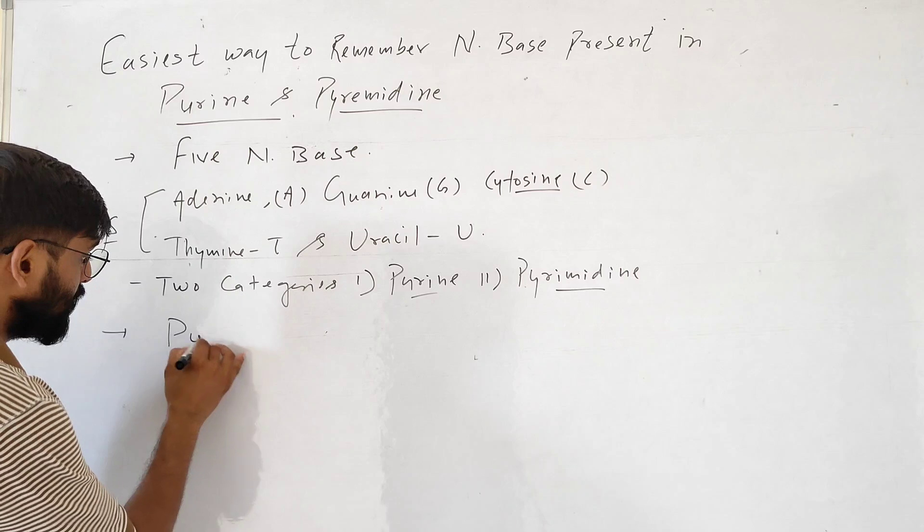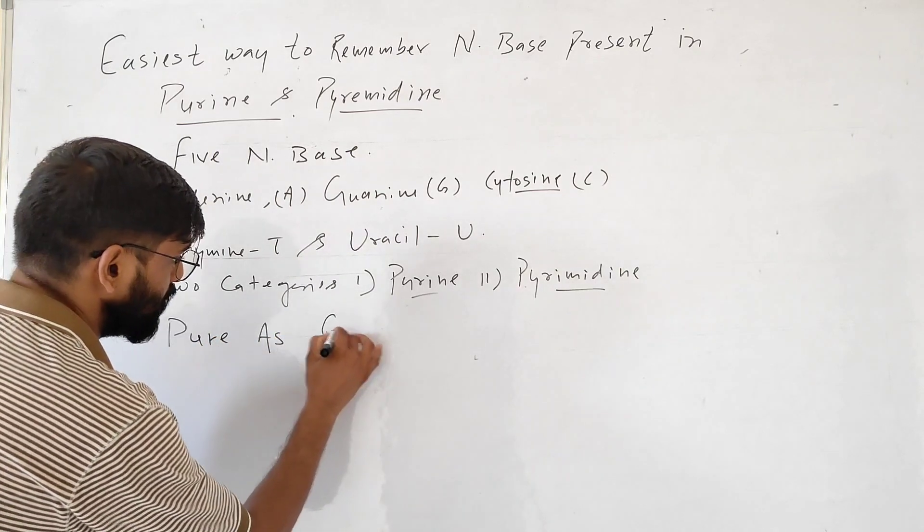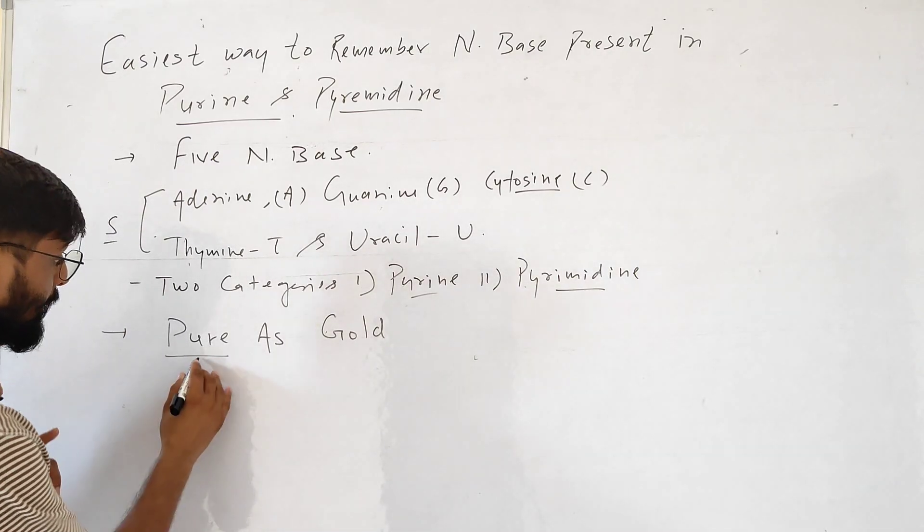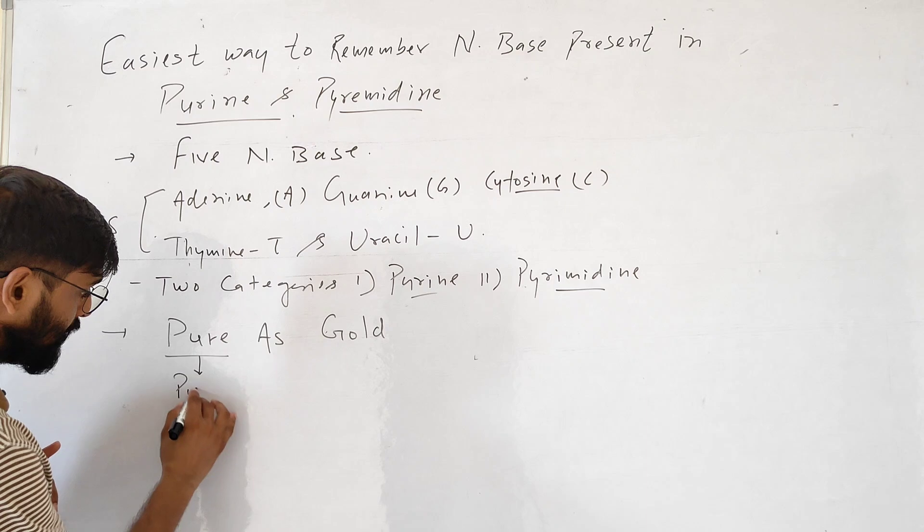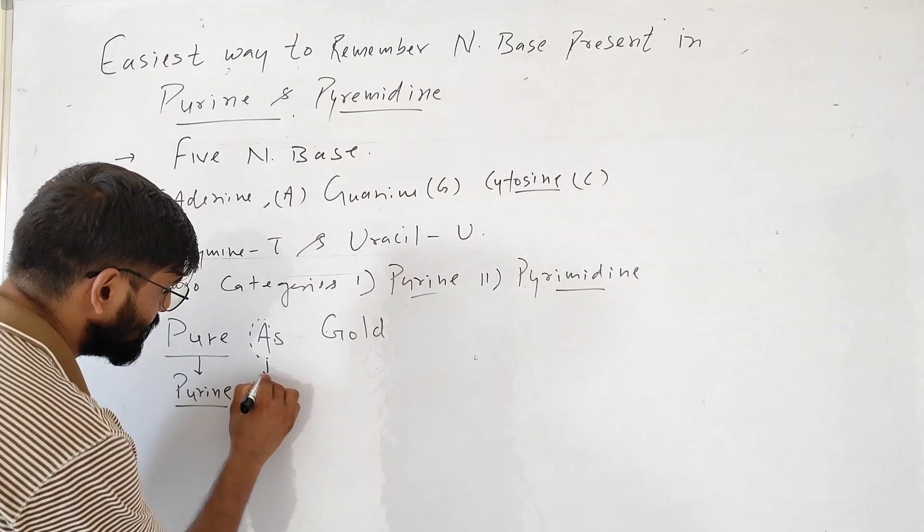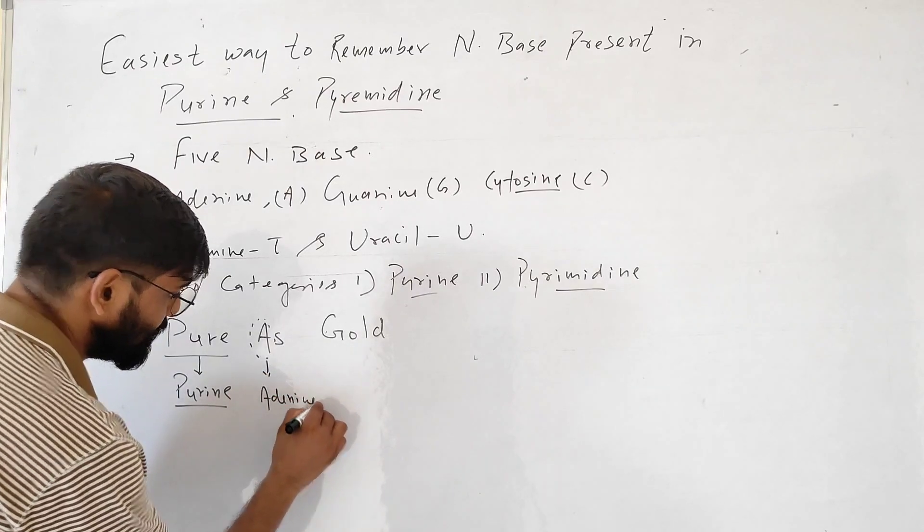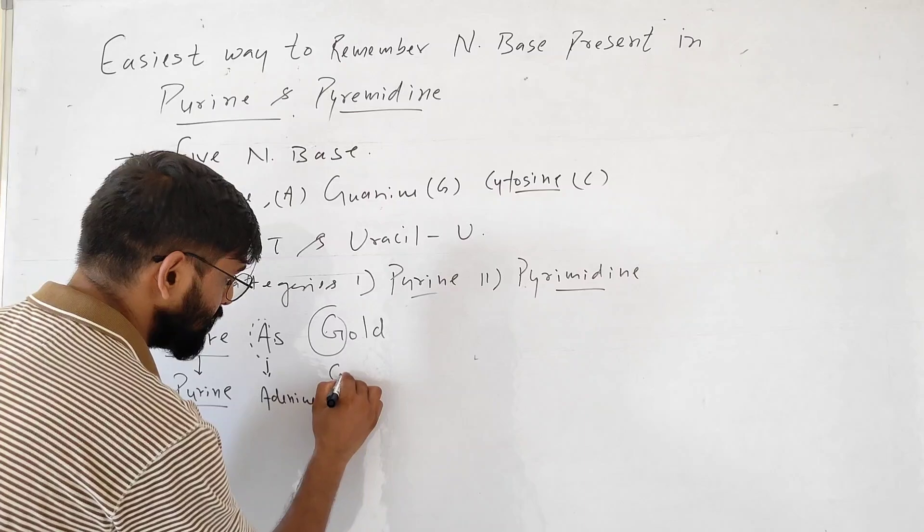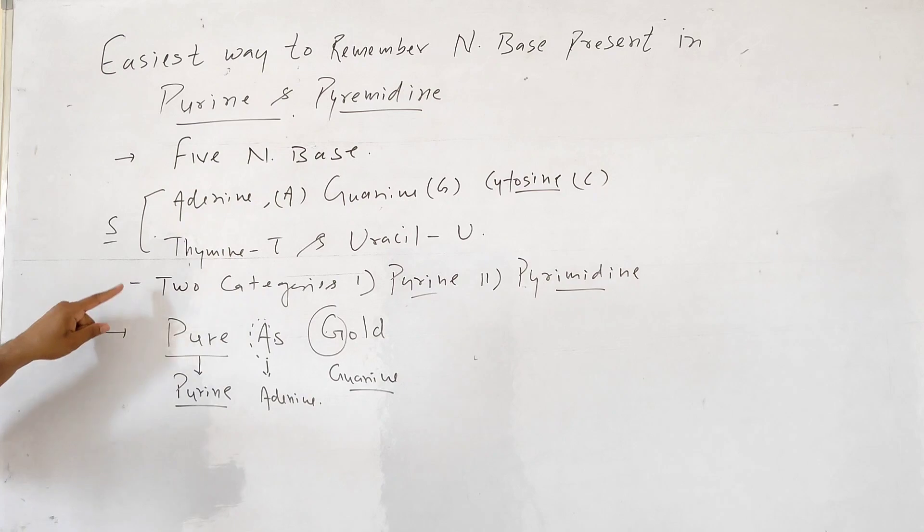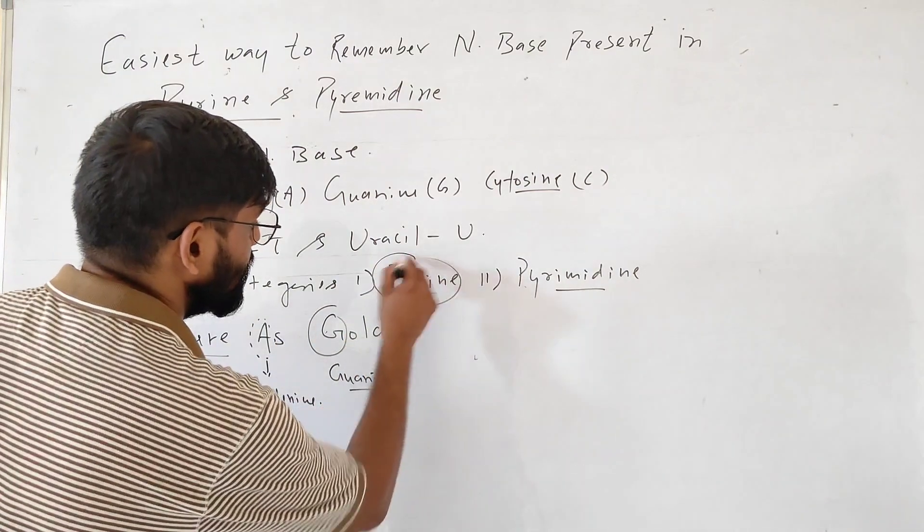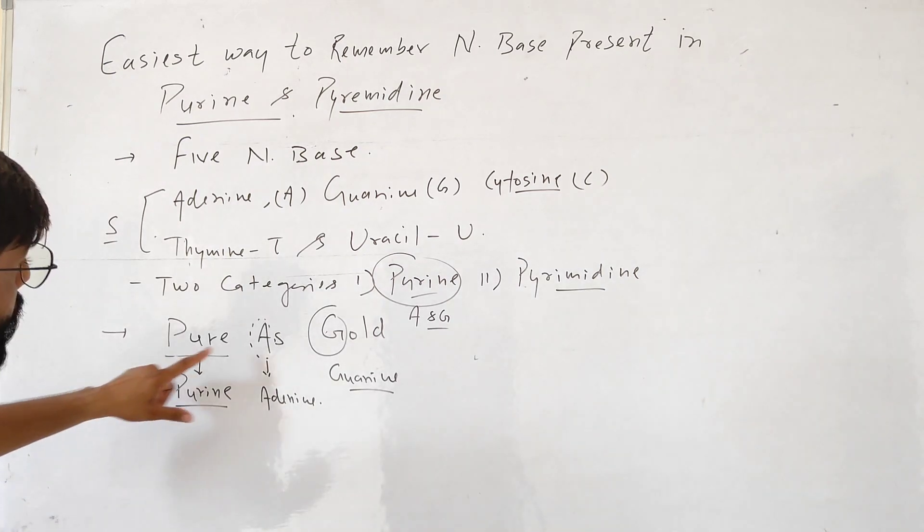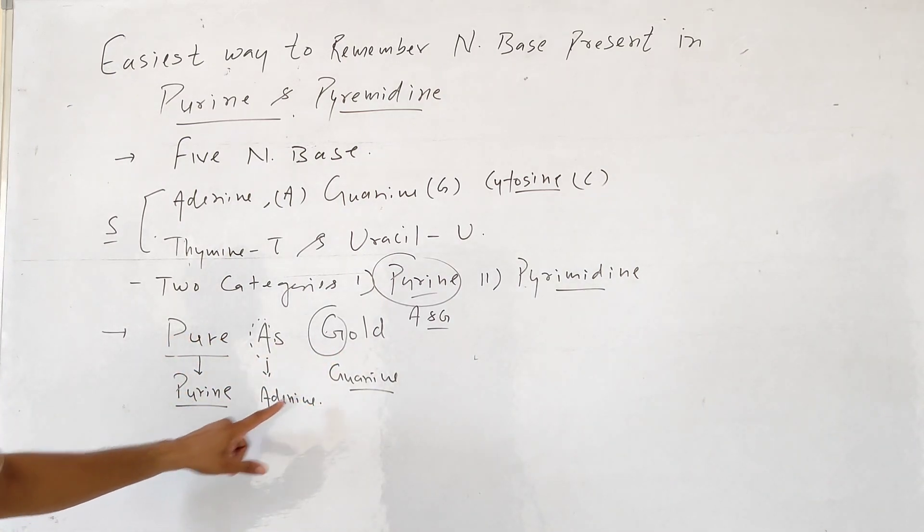First is pure as gold. So our first sentence is pure as gold. Here, we will take pure as purine. Pure means purine. We will use this A - A means adenine, and G means guanine. So adenine and guanine come in purine. Purine is A and G. We can remember this: pure as gold - pure has adenine and guanine.